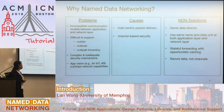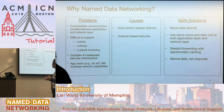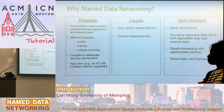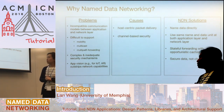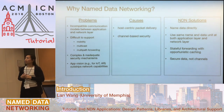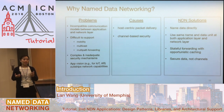Here I'm summarizing some basic problems faced by applications today. One is the incompatible communication models between applications and the network — the network cannot support mobility, multihoming, and multipath forwarding, which are very important to applications. We also have very complex and inadequate security mechanisms. The visions we have for future applications are not supported by the current network. The fundamental causes are host-based packet delivery and channel-based security.